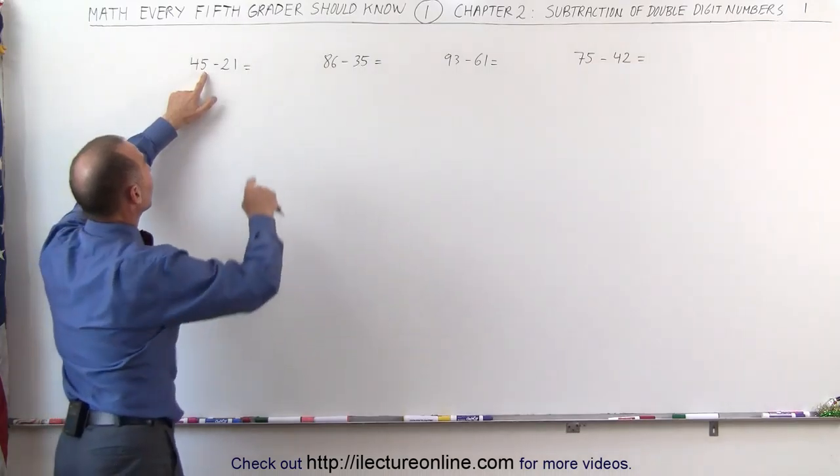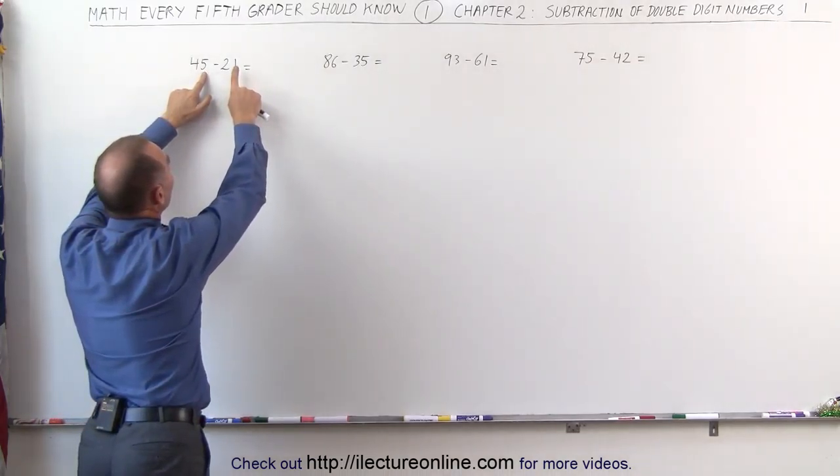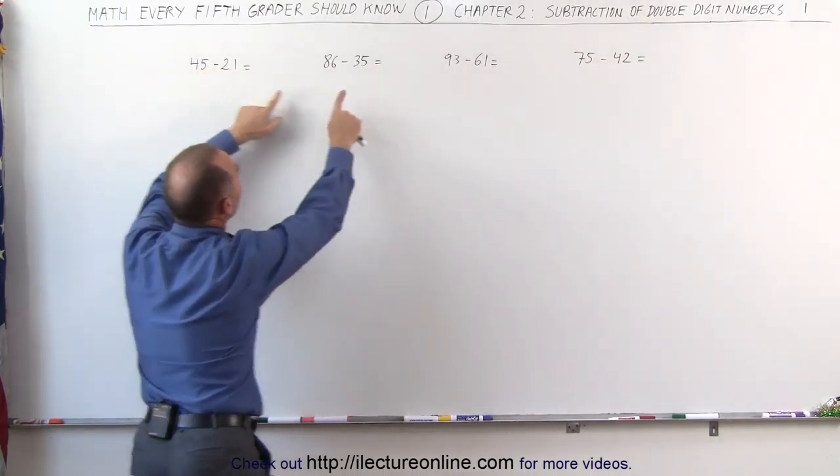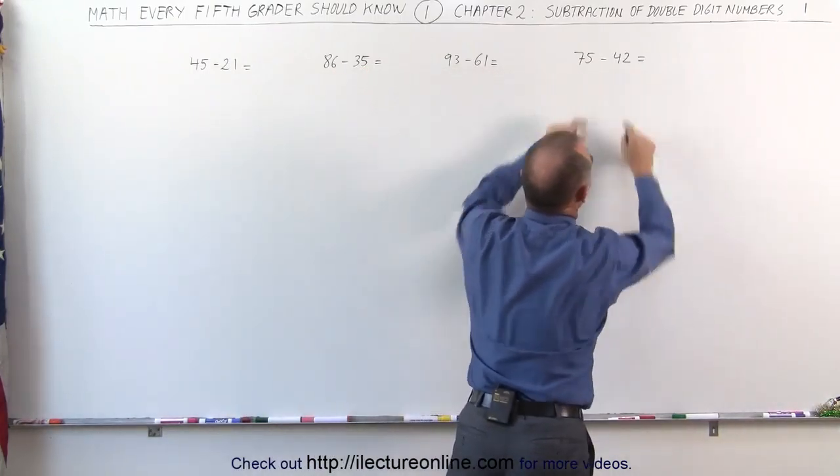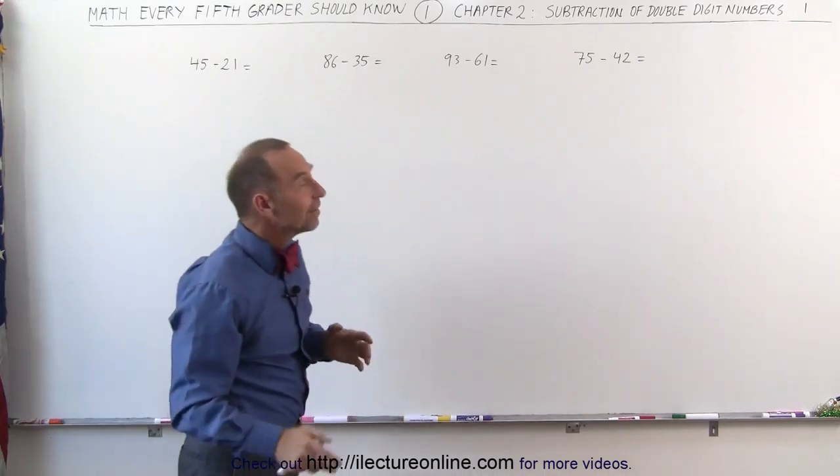If you look carefully, notice that the last digits on each number - this one is smaller than that, this one is smaller than this, this one is smaller than that, and 2 is smaller than 5. That makes it easier.